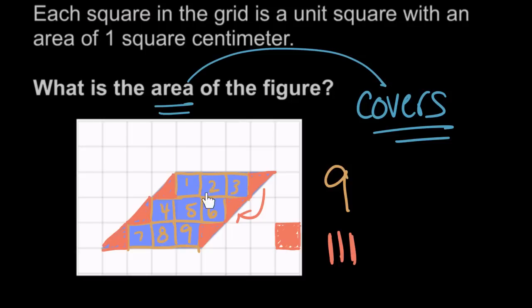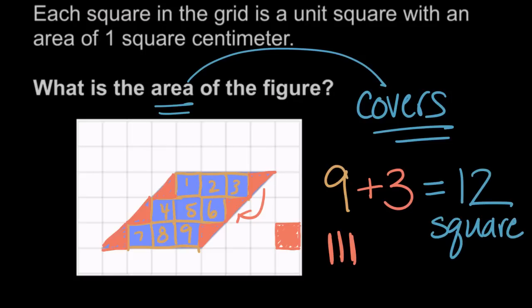So we have nine full unit squares plus three more unit squares that we made by combining. We made one by combining these two, a second unit square with these two, and a third unit square here. So we have nine full unit squares, and then three more unit squares we put together, which is a total of 12 square units or 12 square centimeters. Our figure, our quadrilateral, covers 12 square centimeters, so it has an area of 12 square centimeters.